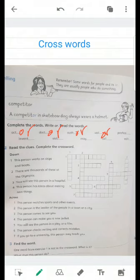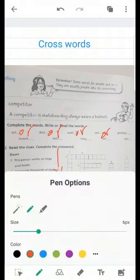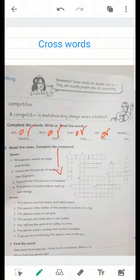We are going to answer these puzzles, these definitions, then write the letters of the word in each square. Number one down. This person works on ships and boats. A person who works on a boat or ship, so he is a sailor. So we write sailor.